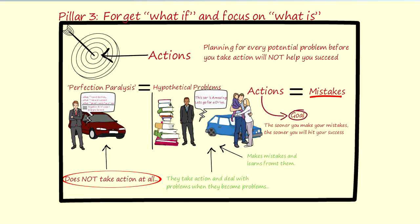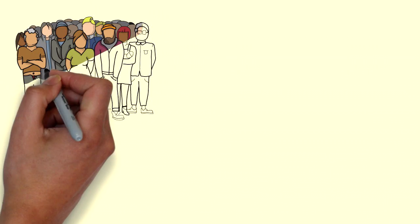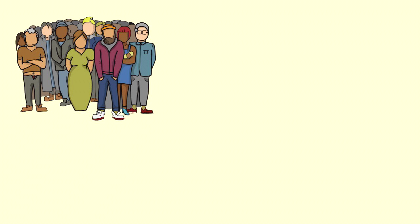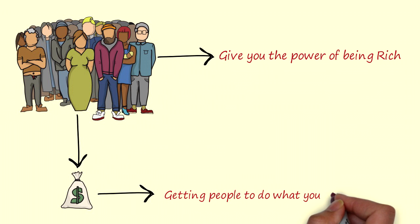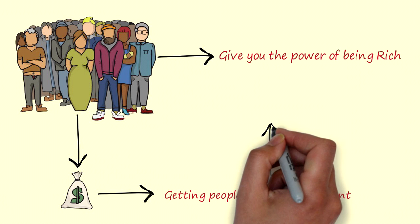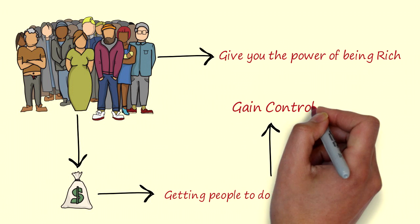What you need to understand in order to become wealthy is that without other people, you will not become rich. Easy, right? Let me explain a bit further. In order for someone to be rich, other people need to exist to give you the power of being rich. So the true secret to making money is getting people to do what you want. If you're trying to get rich, you are basically trying to gain control over other people.